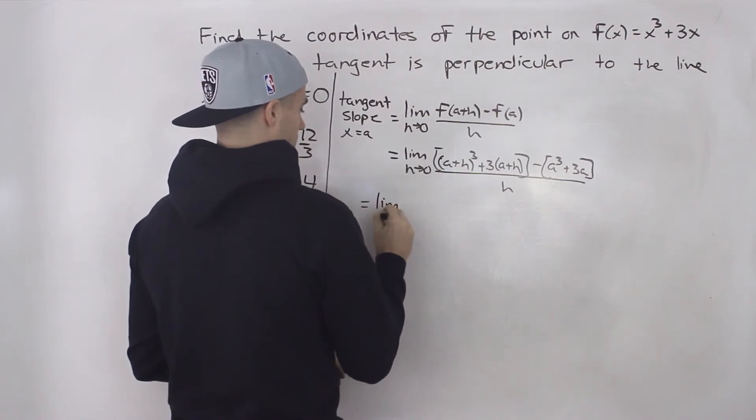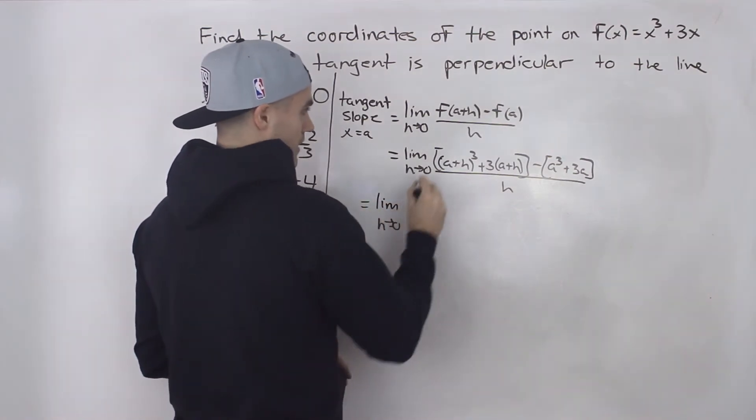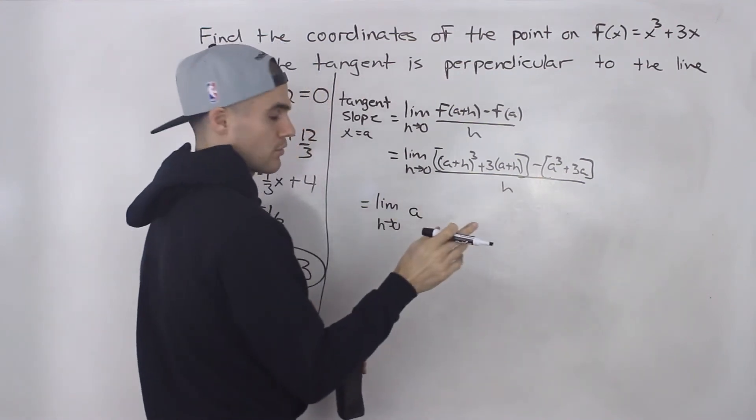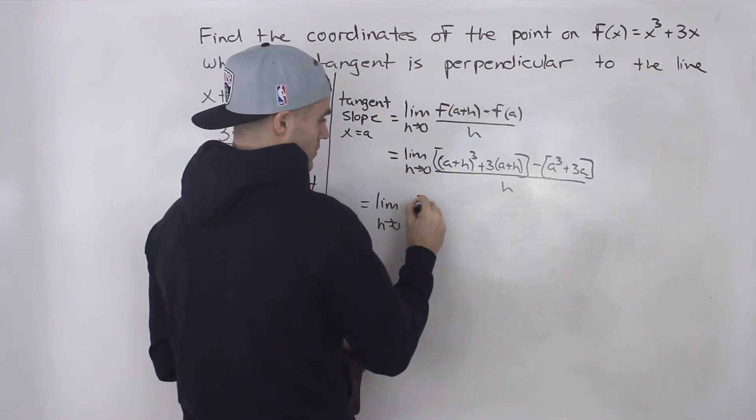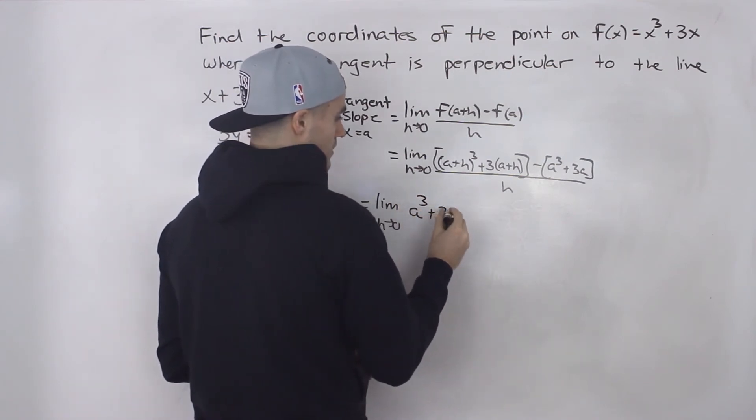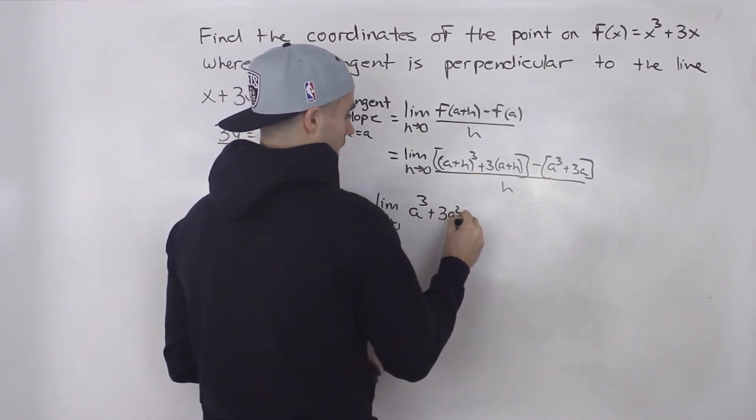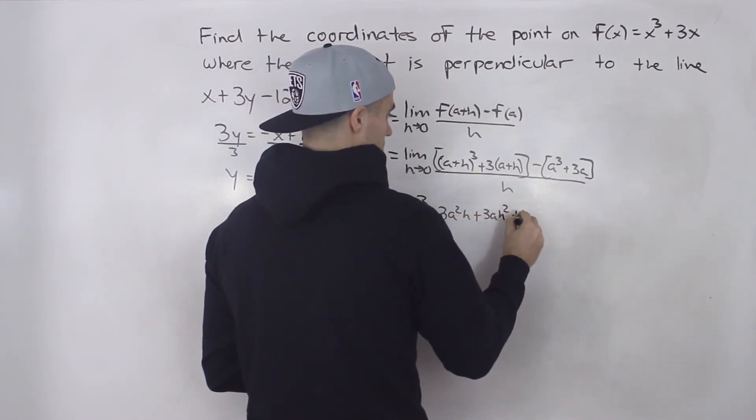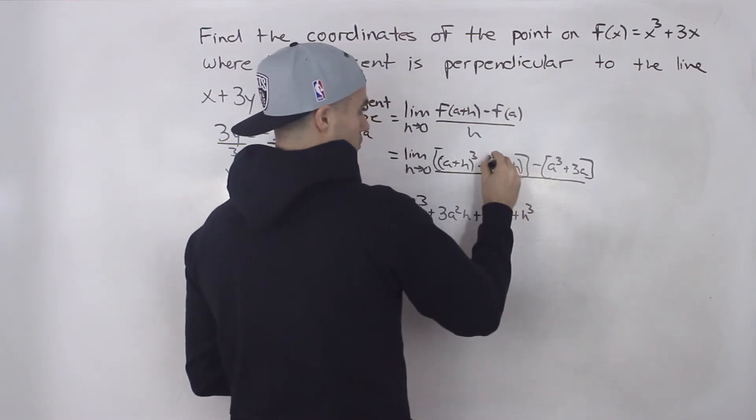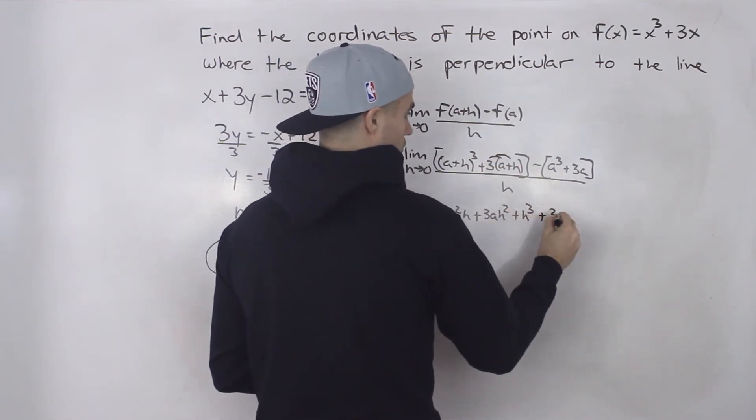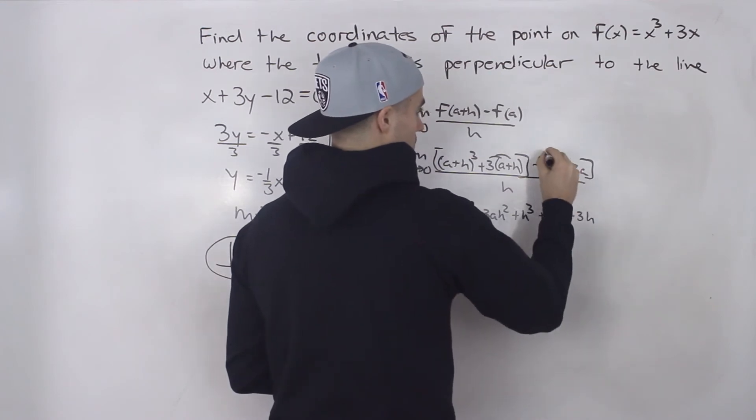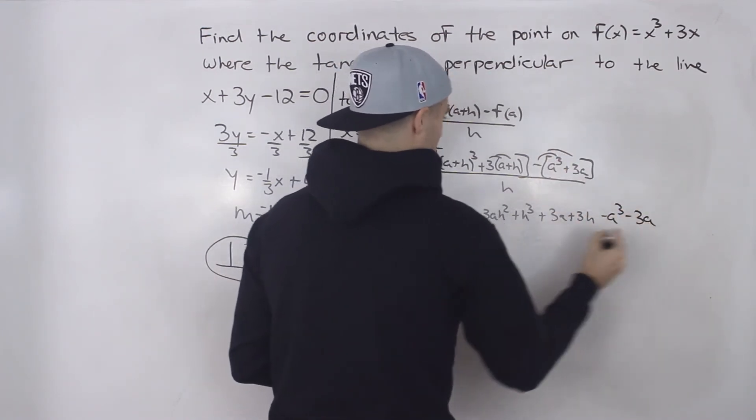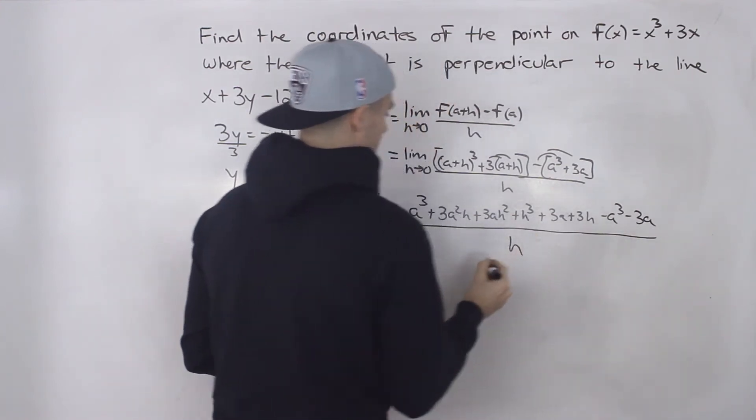So (a + h)³, that would be if you foil that up three times or you could use Pascal's triangle, that would be a³ + 3a²h + 3ah² + h³. Distribute that 3 inside the bracket, we got 3a + 3h. Then distribute the negative inside that bracket, we got -a³ - 3a. This is going to be all over h.